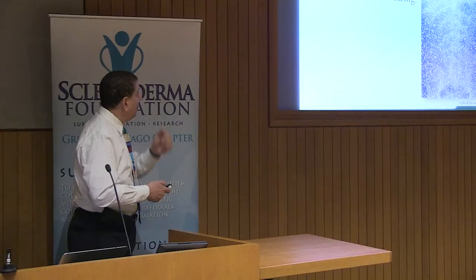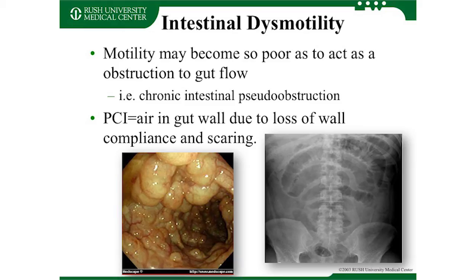Motility becomes an issue and that can lead to air accumulation. Pneumatosis cystoides intestinalis shows these blebs full of air in the small bowel — it looks scary but is pretty benign, so we usually leave it alone.